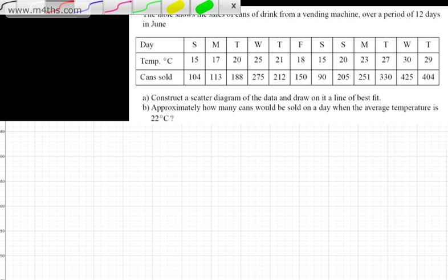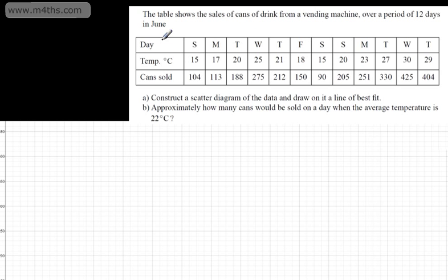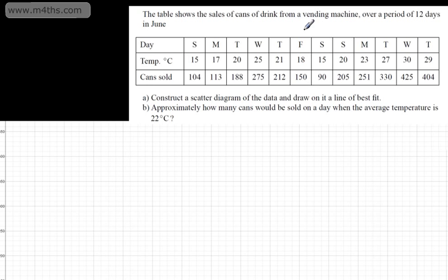Let's go on and try a question. The table shows the sales of cans of drink from a vending machine over a period of 12 days in June. We've got the days — Sunday, Monday, Tuesday, Wednesday, Thursday, Friday, Saturday, Sunday, and so on — along with the temperature and cans sold. Part A says: construct a scatter diagram of the data and draw on it a line of best fit. The temperature is the independent variable and the cans sold is the dependent variable — as the temperature increases, we'd expect cans of drink sold to increase.